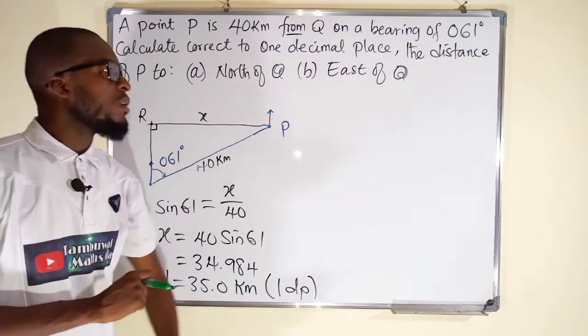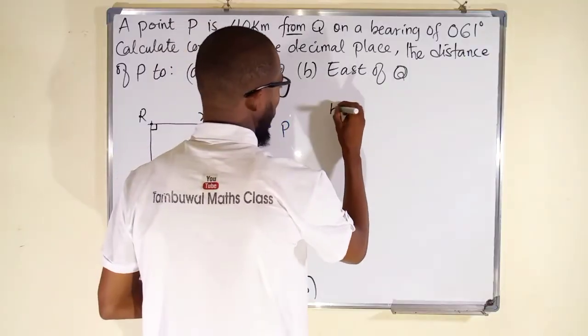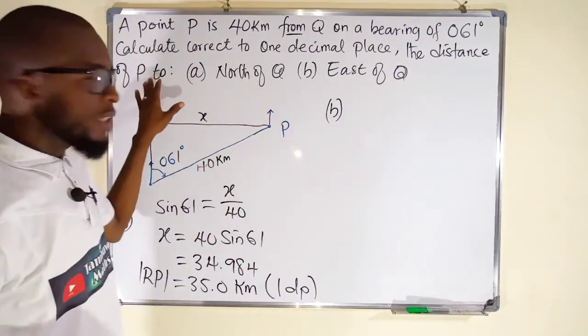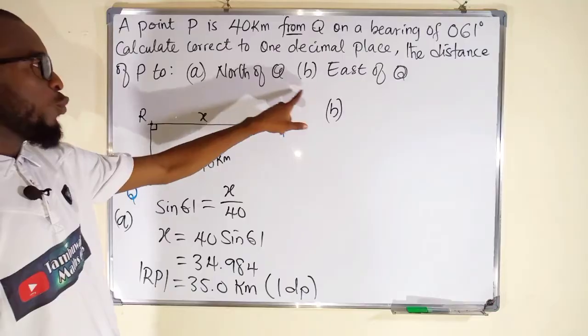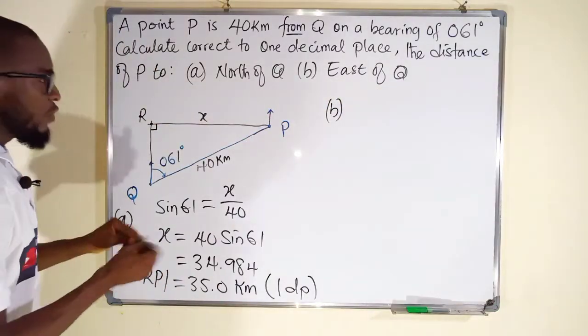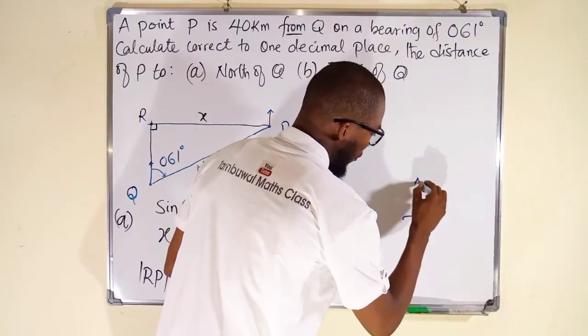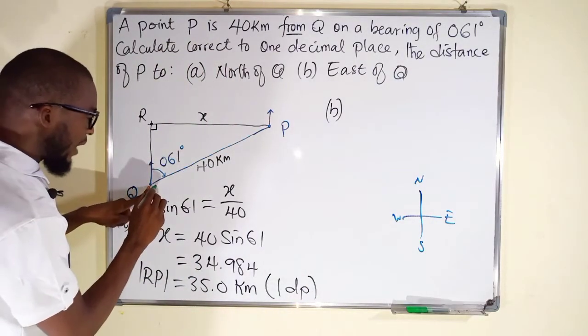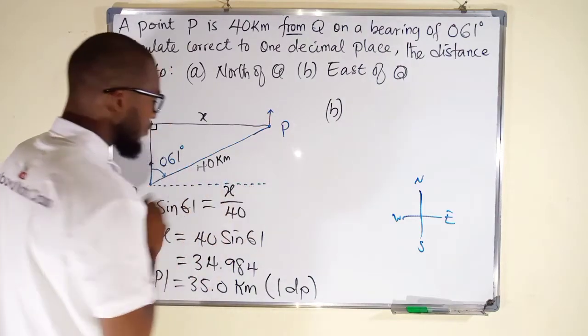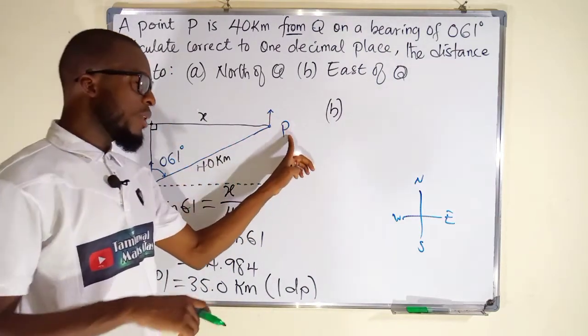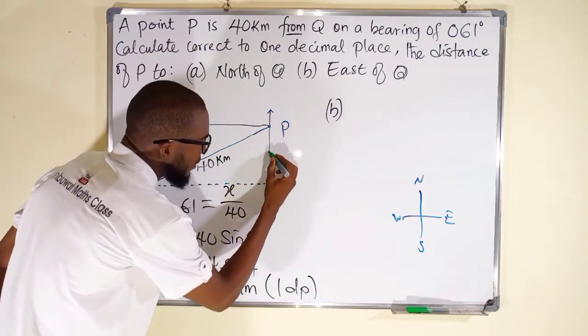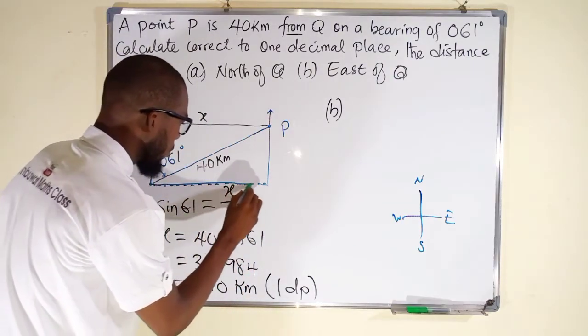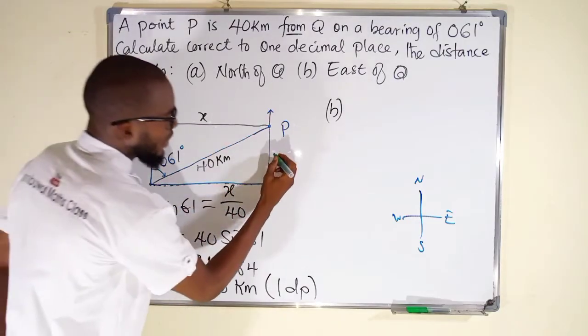Now let us move on to the B part. The B part says we should calculate the distance of P to east of Q. Where is the east of Q? Our cardinal points are like this. We have north. We have south. We have east. We have west. So if this is Q, this is exactly east of Q. And we want to find the distance of P to east of Q. So we have to draw a vertical line again here that meets with this horizontal line that comes from Q.